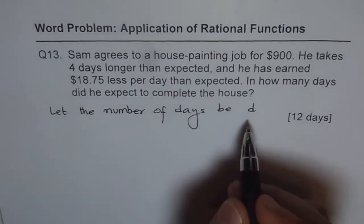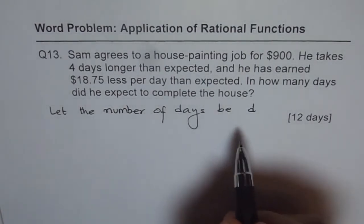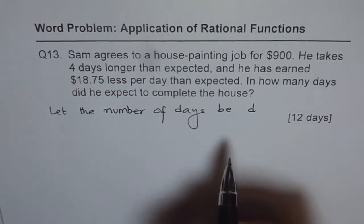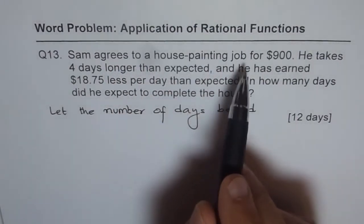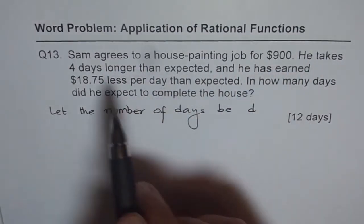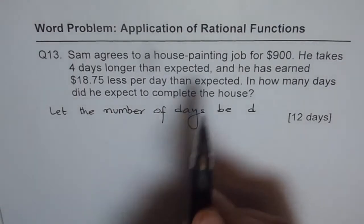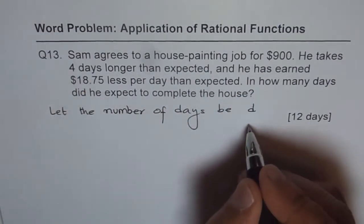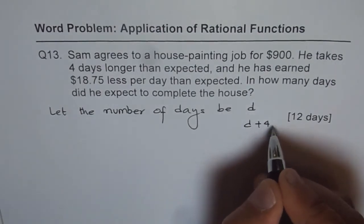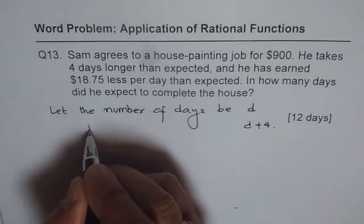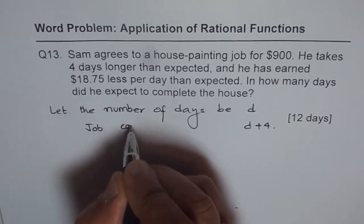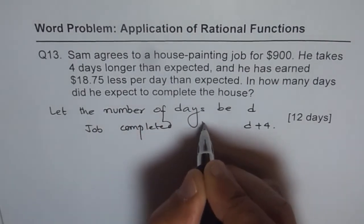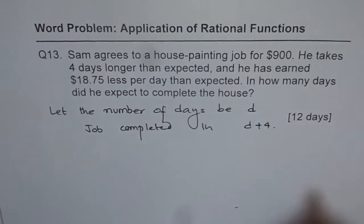Now let's read the problem once again to get the equation. Sam agrees to a house painting job for $900. He takes 4 days longer than expected, that means he actually does the work in D plus 4 days. So he completes the job in D plus 4 days, so job completed in D plus 4 days.